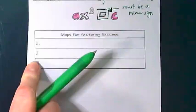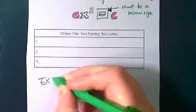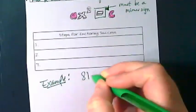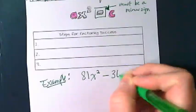We're going to write down these steps as we work through this example. Write the word 'example' and then 81x² - 36.